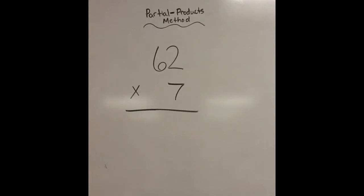Now partial products is the first method that I actually introduced and that our curriculum, Everyday Math, has us introduced to the students. And I think the reason that they do it is because it focuses on the actual value and the meaning behind the numbers. So for example, 6 is worth 60, 2 is worth 2, and 7 is still a 7. So unlike the traditional method, we actually start from the left and work our way right. So let's give this one a try too.